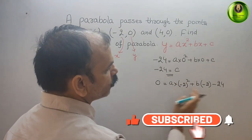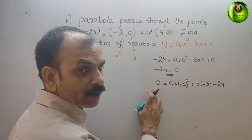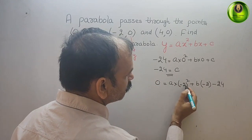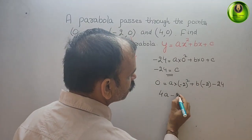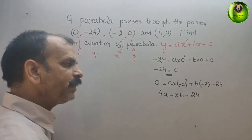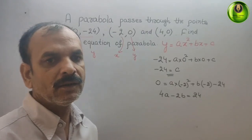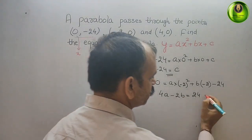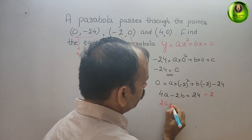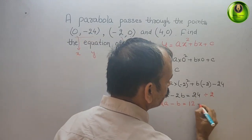Bring -24 to the other side, it becomes 24. Solving: (-2)² is 4, so we get 4a - 2b = 24. Since all coefficients are even, we divide by 2. The new equation is 2a - b = 12. This is our first equation.